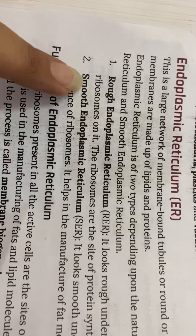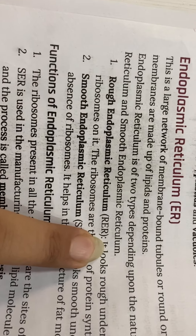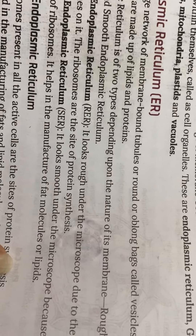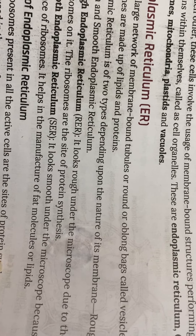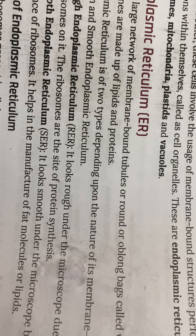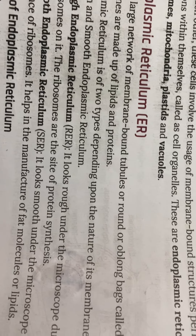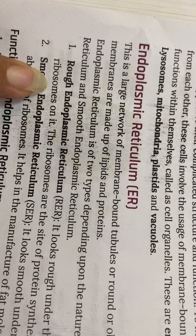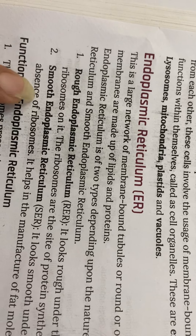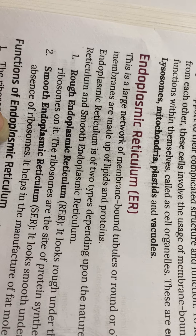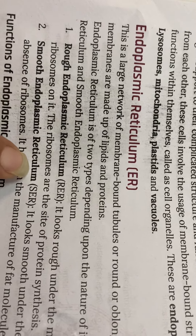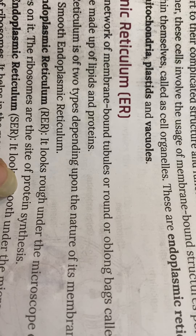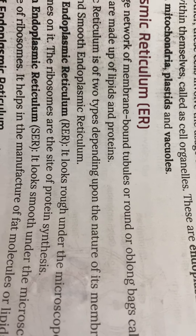The endoplasmic reticulum is of two types: rough endoplasmic reticulum and smooth endoplasmic reticulum. The rough endoplasmic reticulum has a rough surface because ribosomes are present on it. The smooth endoplasmic reticulum has an absence of ribosomes. The function of ribosomes is that they help in protein synthesis.